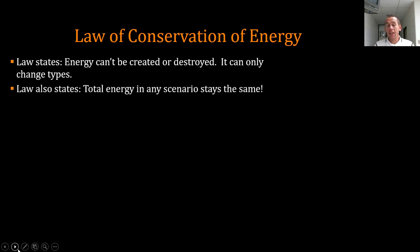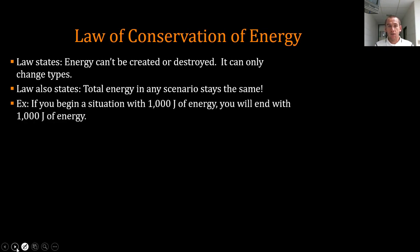So all those types listed before, we can change kinetic into potential energy, or potential into kinetic energy, or even kinetic into thermal energy. So the total amount of energy in any scenario stays the same. If it doesn't, then you lost some somewhere and you've got to figure out where it went. So if you begin a situation with a thousand joules of energy, we're going to end with a thousand joules of energy. But it doesn't mean it's all in the same place or even in the same form.